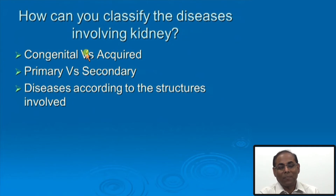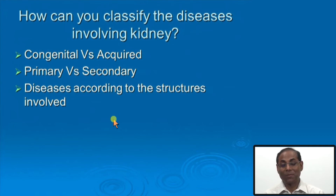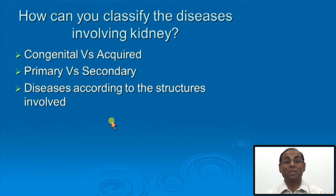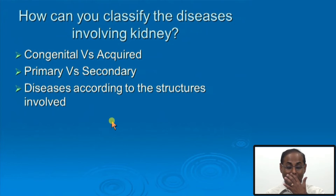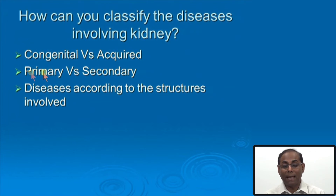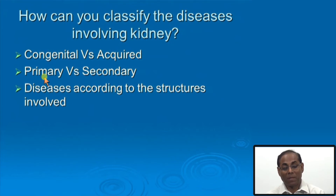When thinking about diseases involving the kidney, one simplistic way to classify them is congenital versus acquired. We can also classify them as primary versus secondary — for example, in systemic lupus erythematosus or hypertension, kidney damage would be a secondary disease. A disease like glomerulonephritis involving only the kidney with no other organ involvement would be a primary disease. We can also classify diseases according to the structures which are involved.